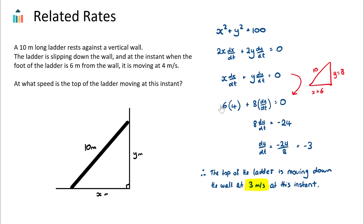Substituting everything in: 6 × 4 = 24. Taking 24 from both sides gives 8 · dy/dt = −24, so dy/dt = −24/8 = −3. The negative sign makes sense because if y is positive going up the wall, the ladder is actually moving down. The question asks for speed, which doesn't take direction into account, so we take the magnitude: the speed is 3 meters per second that the top of the ladder is moving down at this exact instant.